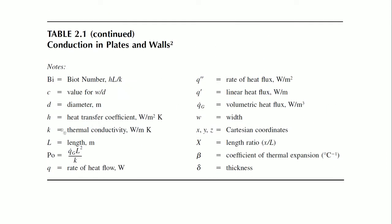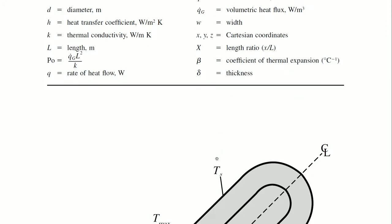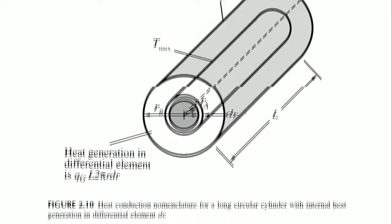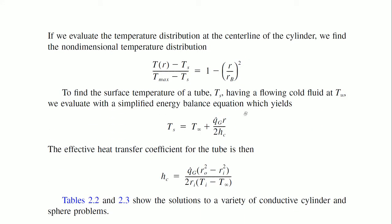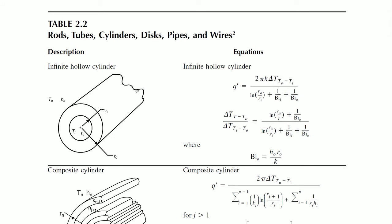As you go down you have more and more heat conduction nomenclature — for a long cylindrical element with heat generation in a differential element dr, showing how heat generation takes place in a thin layer as it moves. The subsequent things talk about various configurations: rods, tubes, cylinders, discs, pipes, and wires. A huge number of tables explain how an infinite hollow cylinder works.